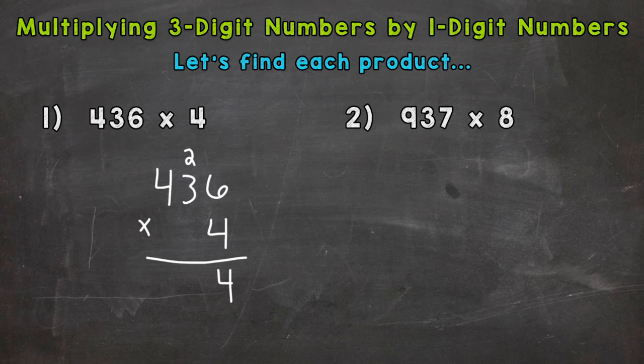Now we need to do 4 times 3. We're actually doing 4 times 30 because that 3 is in the tens place but we can just think of it as the simple digits of 4 times 3. So 4 times 3 is 12 plus that 2 gives us 14. So we write our 4 here and we carry our 1 to the hundreds place.